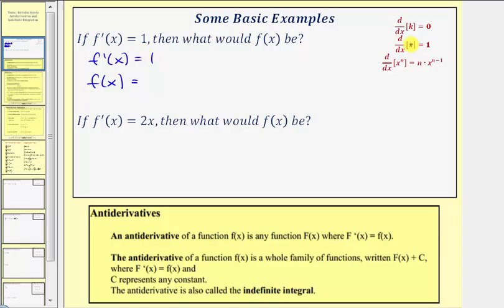We should recognize that the derivative of x with respect to x is equal to one, so our function f of x could just be f of x equals x. But because the derivative of a constant is also zero, we could add a constant, and the derivative would still be equal to one. So f of x equals x plus c. Notice there are an infinite number of functions that have a derivative equal to one. In this case, we say that f of x is the antiderivative of f prime of x.